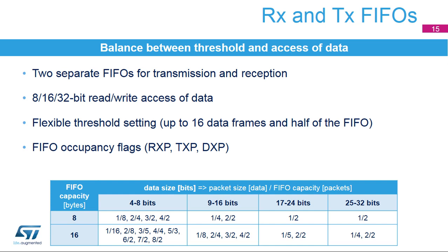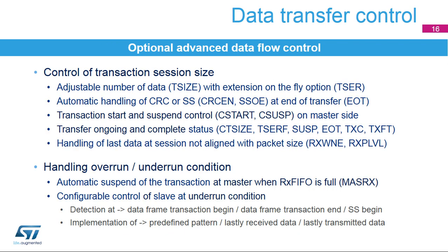The user can then perform proper write or read service of data registers corresponding to a single packet size. Both packets to be transmitted and received can be serviced by a common handling procedure when the dual occupancy DXP flag is set. The occupancy flags are evaluated dynamically in relation to the bus traffic and the current FIFO content, so they have to be checked exclusively once the associated packet service is fully completed. Both the master and slave can apply either endless data transfers or handle a defined number of data to be sent within a single session. The number of data is practically unlimited as it can be extended on the fly as long as the transaction is ongoing.